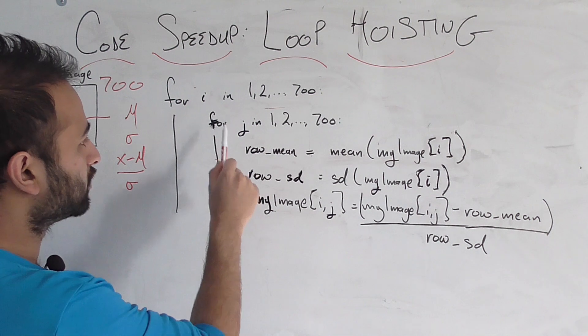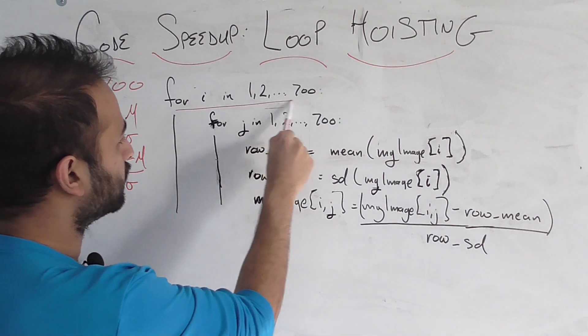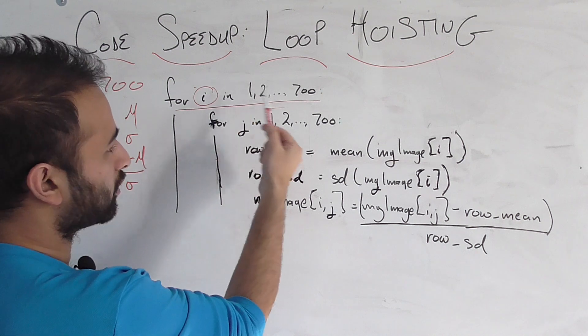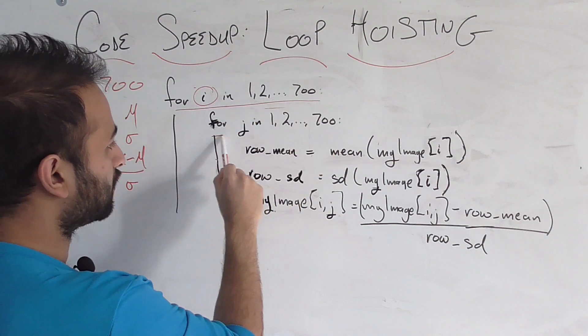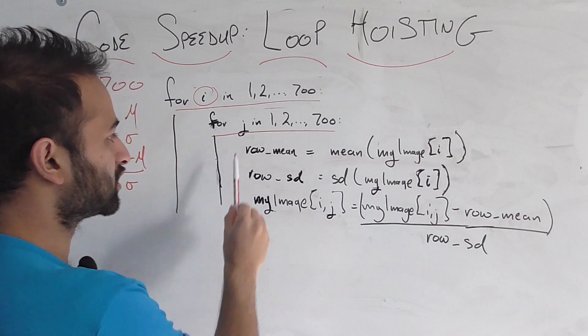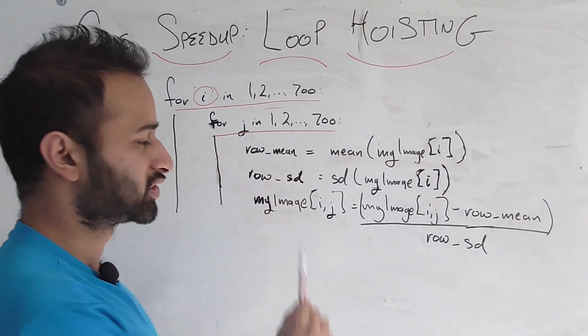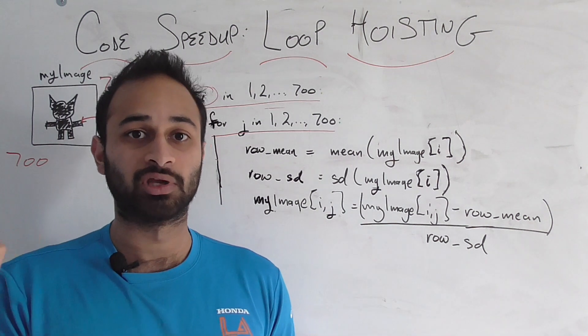So let me explain the code as I've written it. We have a double for loop. One is looping through all of the rows. So the row is given by i for row in 1, 2, all the way to the 700th row. The inner for loop loops over all of the columns given some rows. So j from 1 to 700 again. So these two for loops together just iterate over every pixel in the entire image.